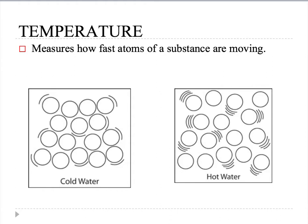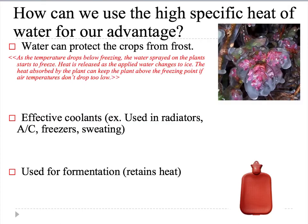Temperature is the measure of how fast atoms of a substance are moving — in hot water they move very fast, in cold water not as fast. Farmers use water's high specific heat to their advantage: when a freeze is expected, they spray water on plants; the water changes to ice and releases heat, which the plant absorbs to stay above freezing. We also use water as an effective coolant — when we sweat, the evaporating water takes heat with it, and water can also keep us warm.